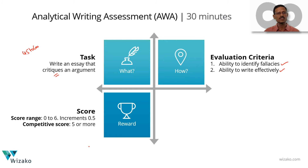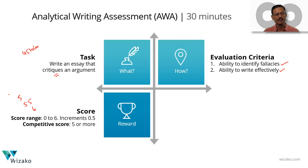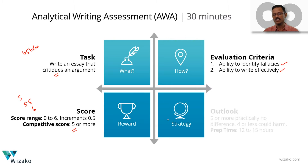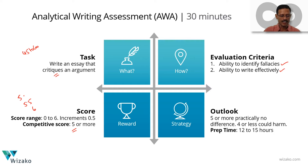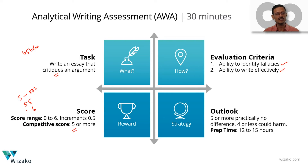The AWA section is scored on a scale of 0 to 6, moving in increments of 0.5 — so scores like 4.5, 5, 5.5, or 6. A competitive score is 5 or more. Have this perspective: a 5 or 6 will not make any difference to your final admit. A score of 5 in 2018 corresponds to the 53rd percentile, meaning roughly half of GMAT test takers score 5 or above. So getting a 5 is not very difficult.